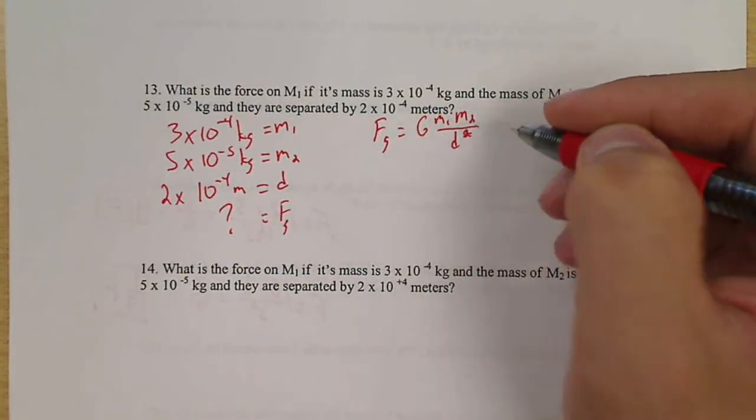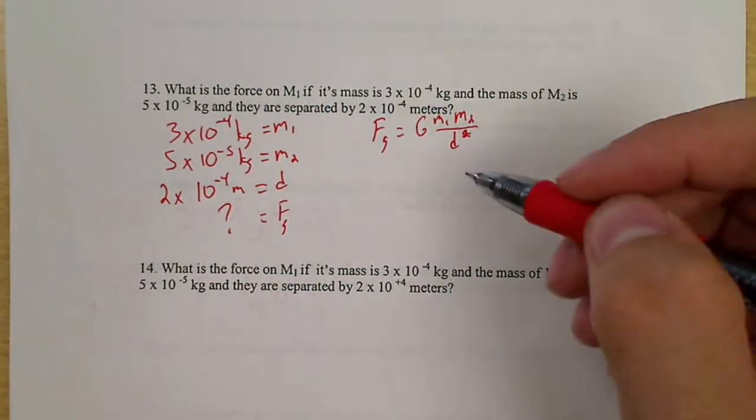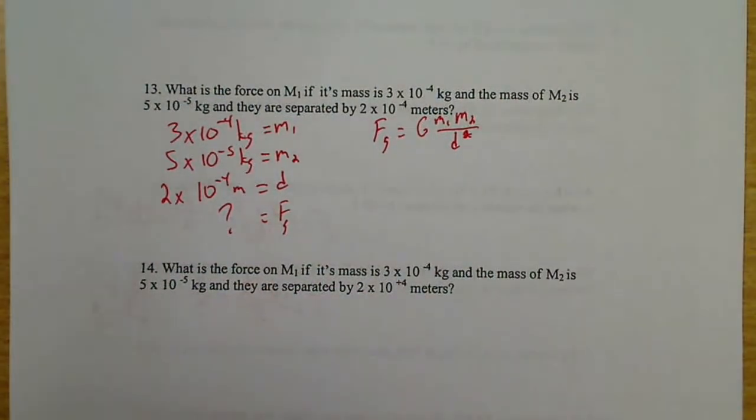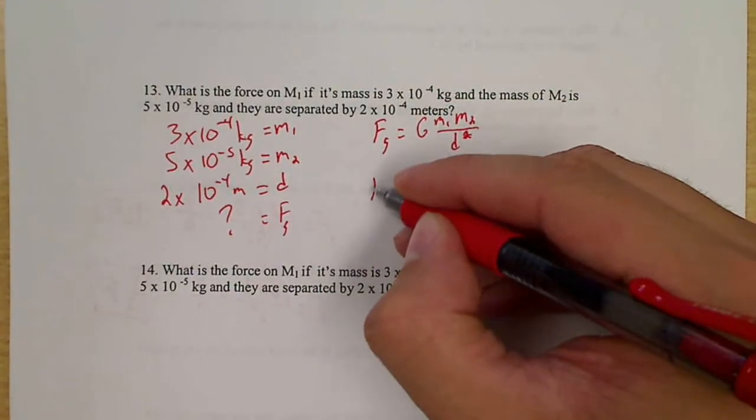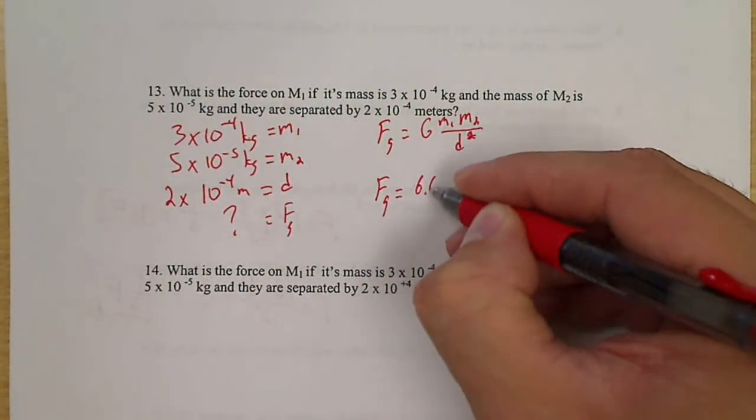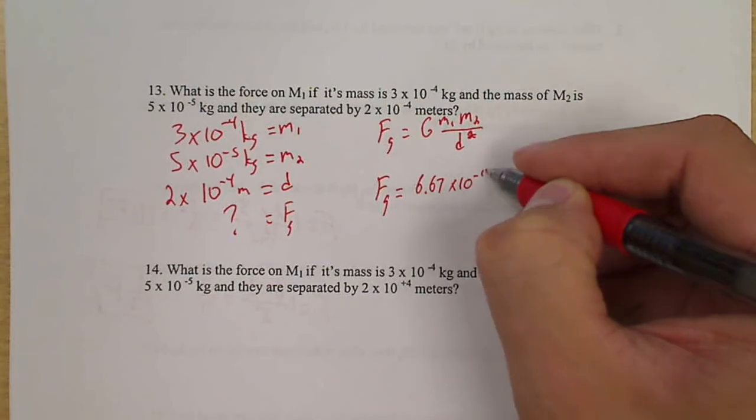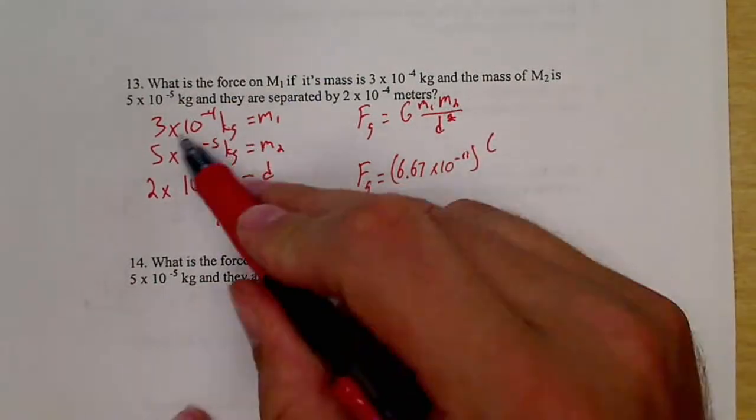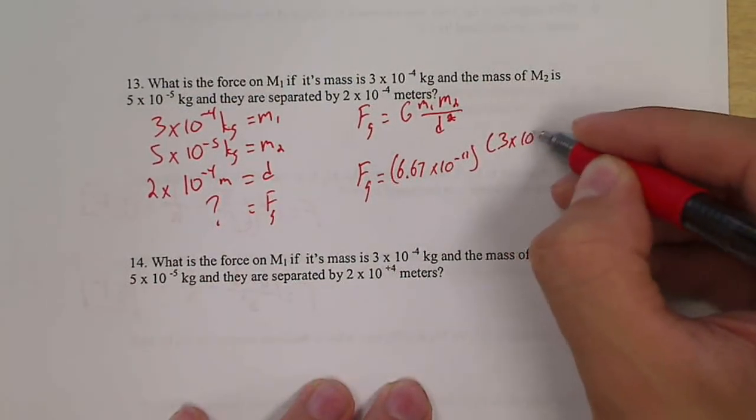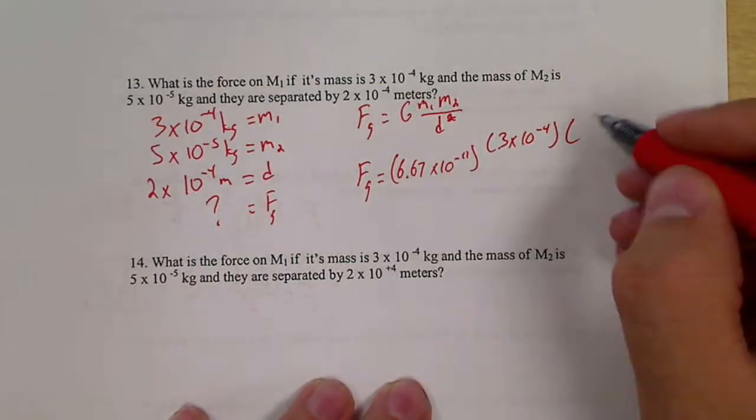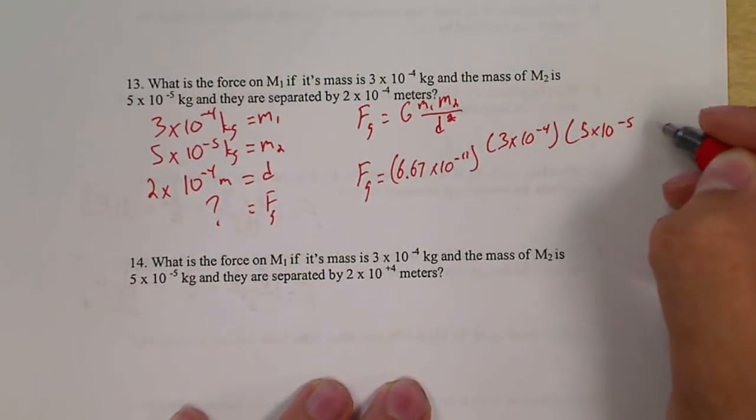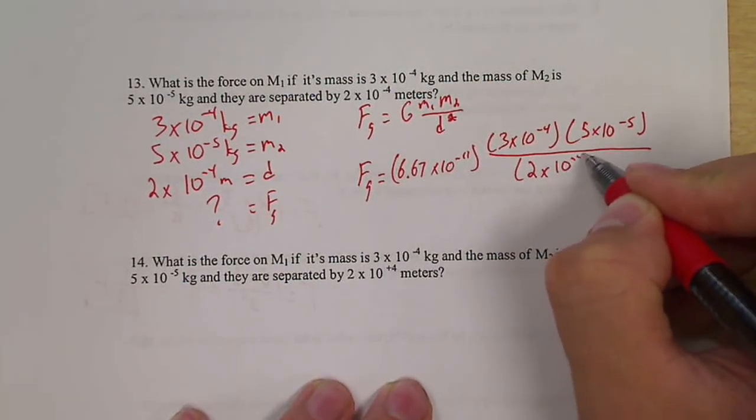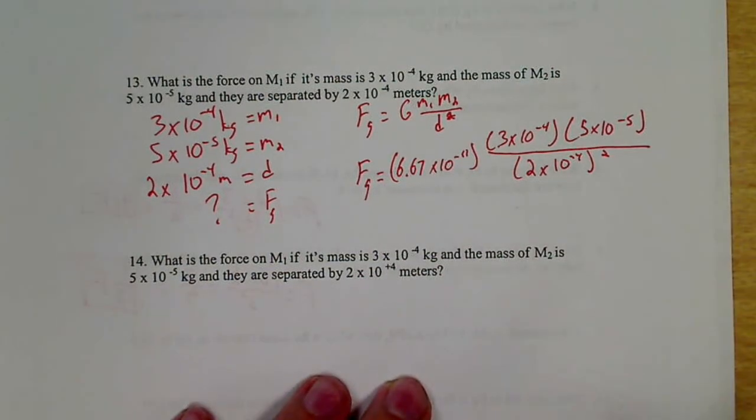Notice how I'm trying to keep everything nice and organized, nice and clean. Small things can make a difference. Like writing the 2 a little bit too high might make it look squared, or writing it too low might make you forget to square it. So be careful. Also notice I am writing down plugging in my numbers before I go to my calculator. That prevents me making mistakes, especially on one like this. So M1 is 3 times 10 to the negative 4th, M2 is 5 times 10 to the negative 5th, over 2 times 10 to the negative 4th squared.